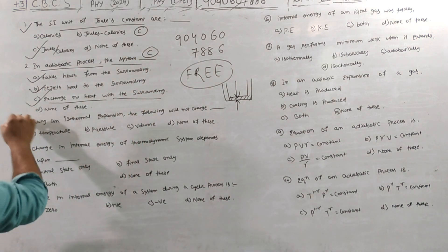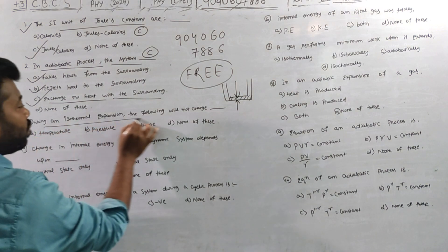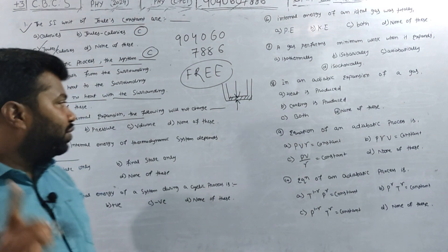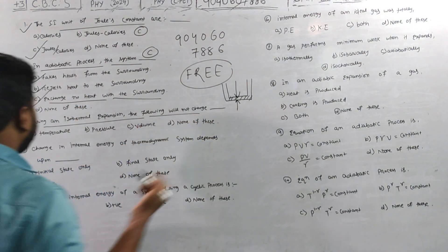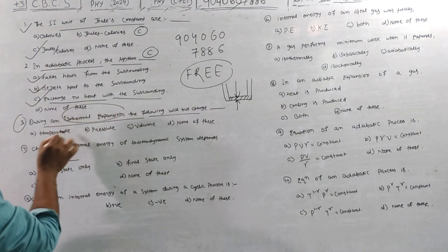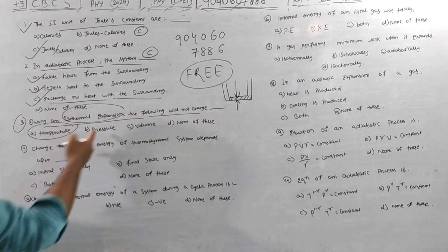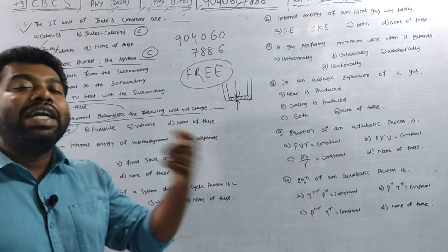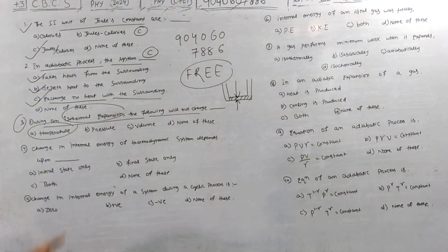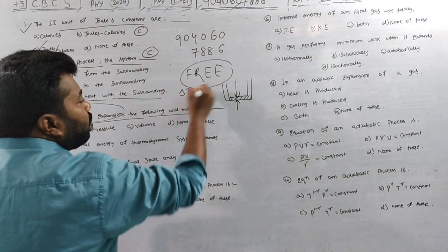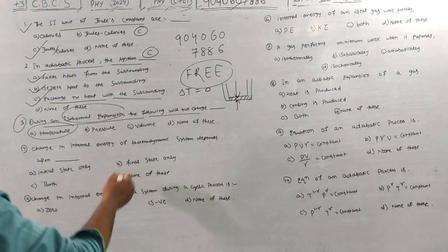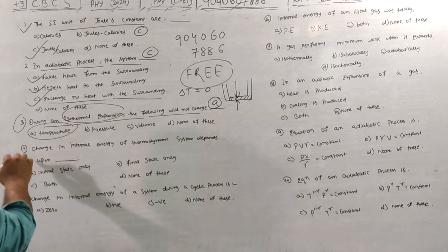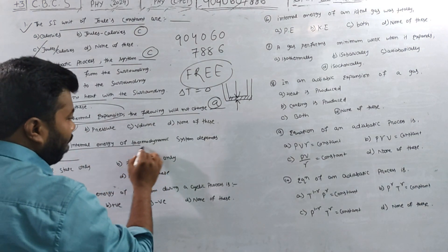The third question: During isothermal expansion, what will not change? The temperature is constant in an isothermal process — 'isothermal' means constant temperature. So ΔT is equal to zero. The answer is A — temperature does not change during isothermal expansion.